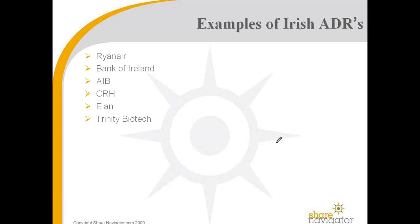Examples of Irish ADRs floated on the New York Stock Exchange — we've picked a couple here: Ryanair, Bank of Ireland, AIB, CRH, Elam, and Trinity Biotech. These are all companies whose shares are also floated on the New York Stock Exchange, and they would have done this through ADRs.